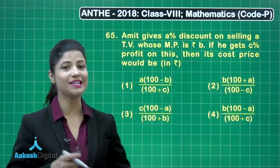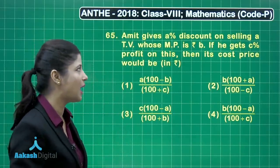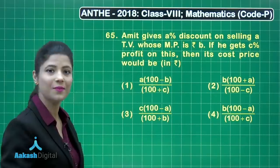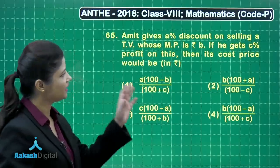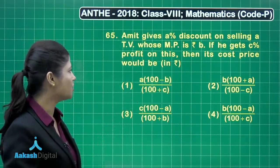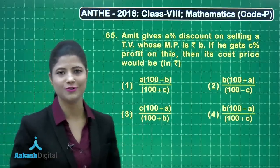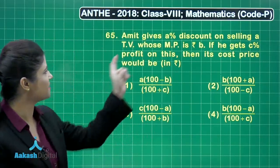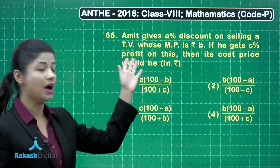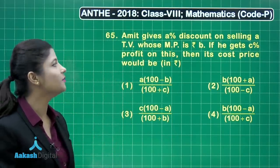Let's discuss question number 65. It states that Amit gives a percent discount on selling a TV whose mark price is rupees b. If he gets c percent profit on this, then its cost price in rupees would be which of the four options? Amit is providing a discount of a percent on the mark price of rupees b.